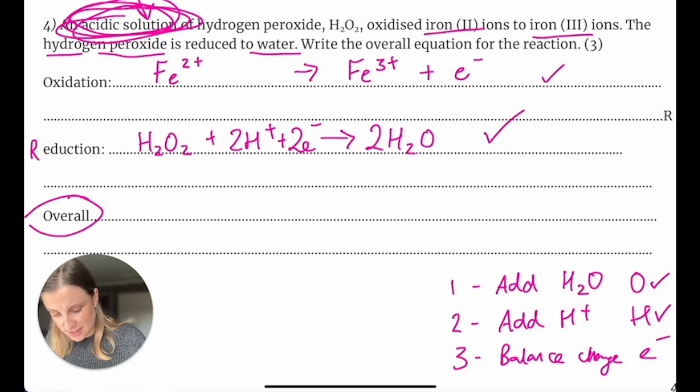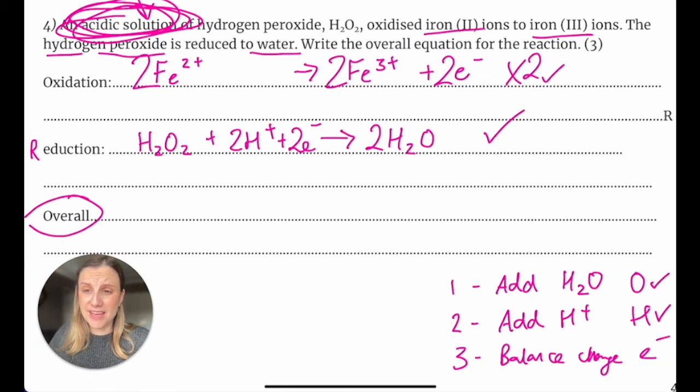So this equation at the top, we're going to times the whole thing by two, because if I times it by two, then that means that those two electrons will cancel out with each other when I push them together into the overall.